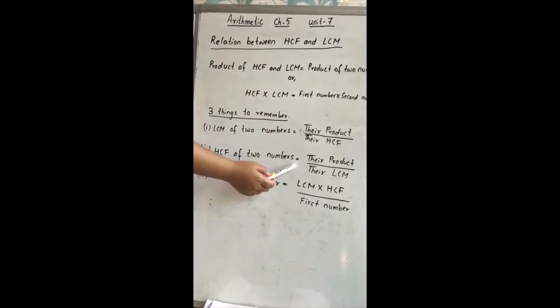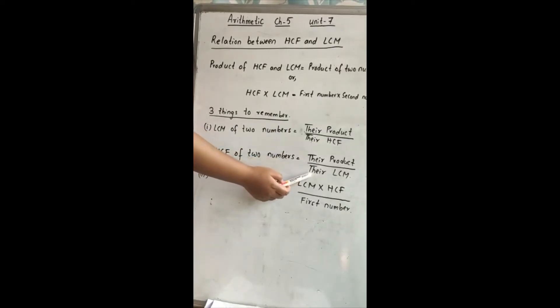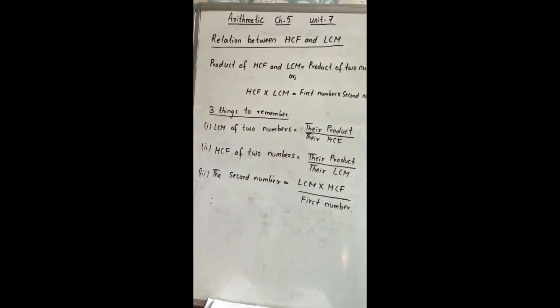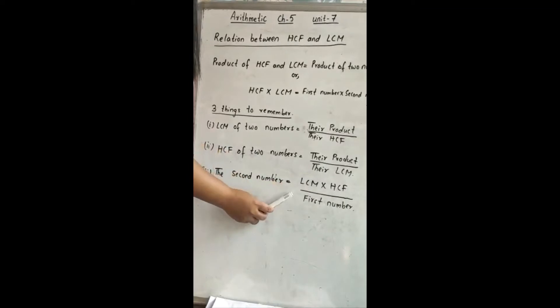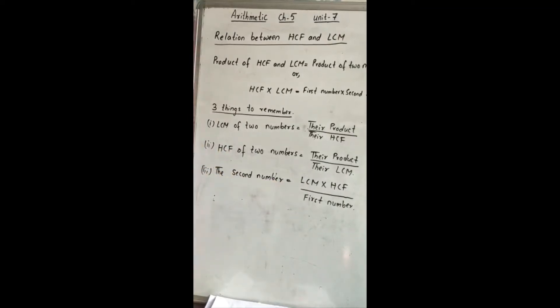Now number two, HCF of two numbers equal to their product divided by their LCM. And the third one you need to remember is the second number is equal to LCM multiplied by HCF divided by the first number.